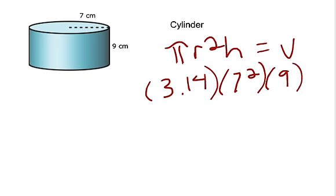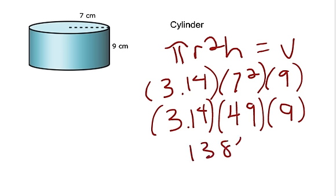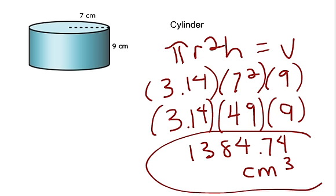7 squared is 49, then we bring down the other numbers — pi (3.14) and the height (9) — and multiply all three together. 3.14 times 49 times 9 equals 1,384.74. The unit is centimeters cubed, so the volume of the cylinder is 1,384.74 cubic centimeters.